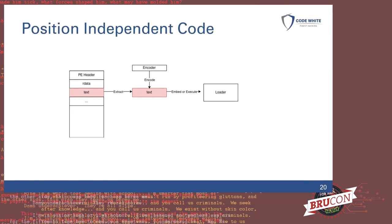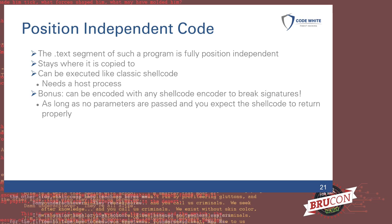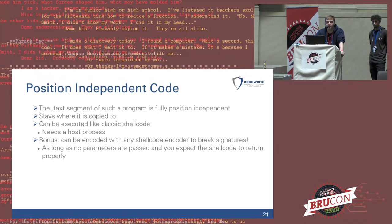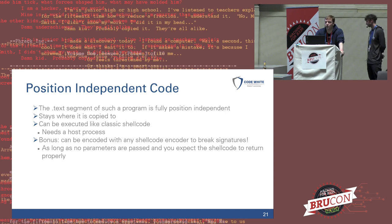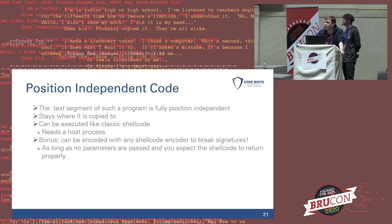If you want to be extra thorough, you can also carve out the text segment and — since it's position-independent code — use your favorite shellcode encoder to break static signatures. The text segment of such a program is fully position-independent, meaning it doesn't need to be initialized. Since there is no PE loading going on, it stays where it was first copied to and can be executed just like classic shellcode, and in combination with shellcode encoders, you break static signatures as well.